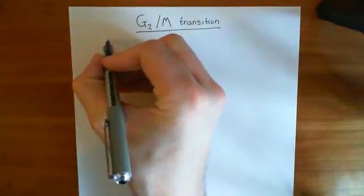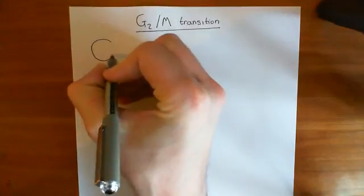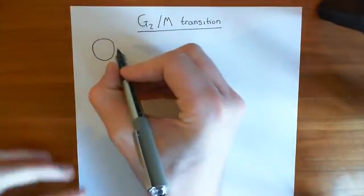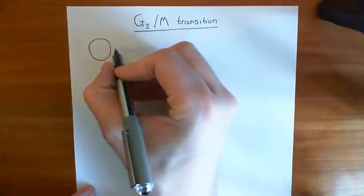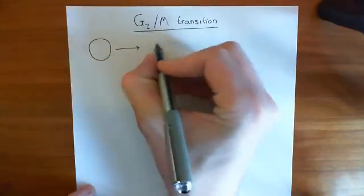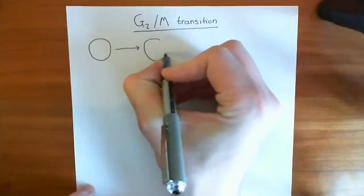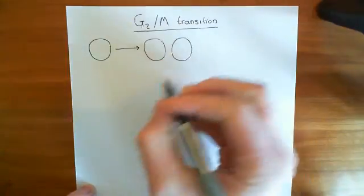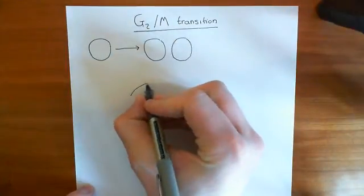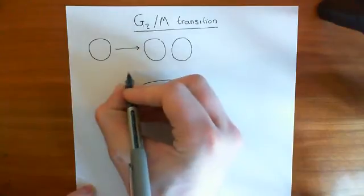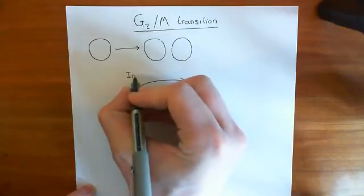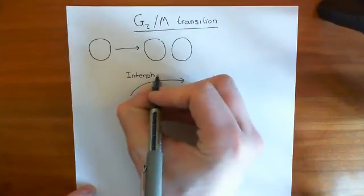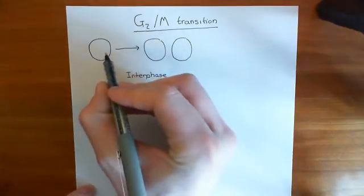So we have a cell here, and the cell cycle is the process by which this cell can go from being in a quiescent sort of period of its life, where it's doing very little, to dividing into two. A big portion of the cell cycle consists of what's known as interphase. Interphase can continue indefinitely, basically, because interphase is this portion of the cell cycle where the cell is not dividing.